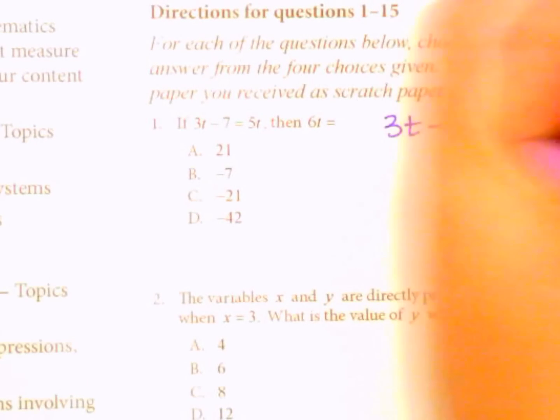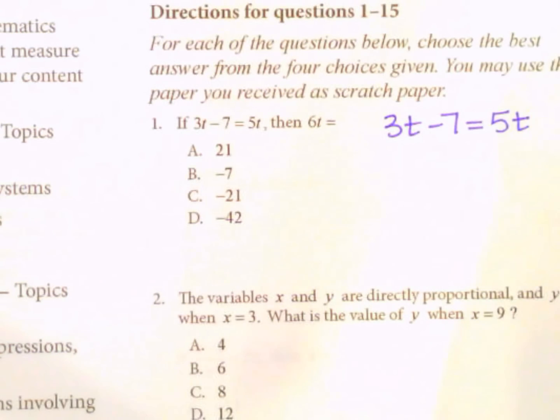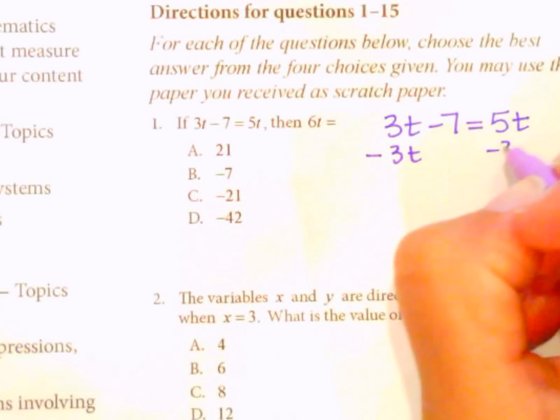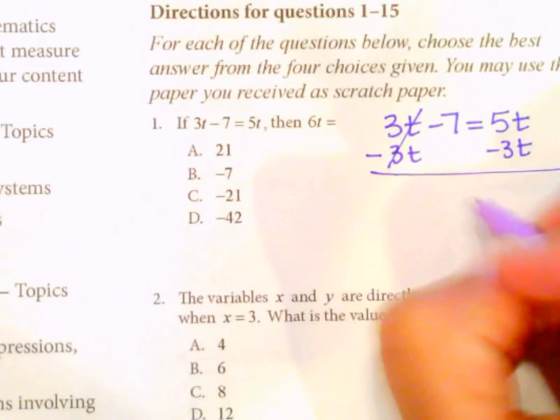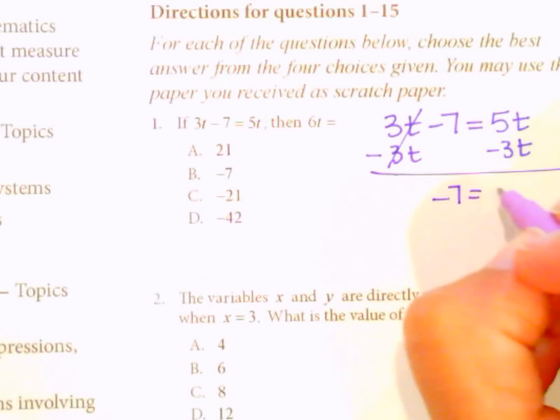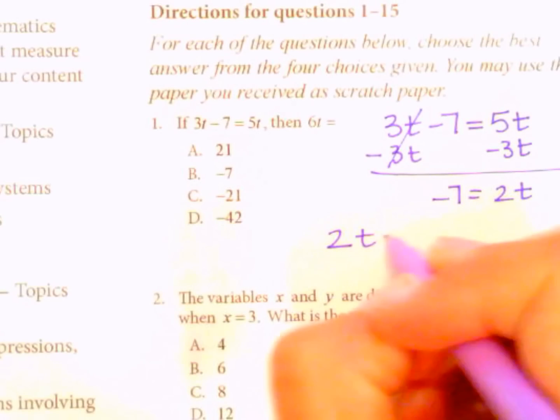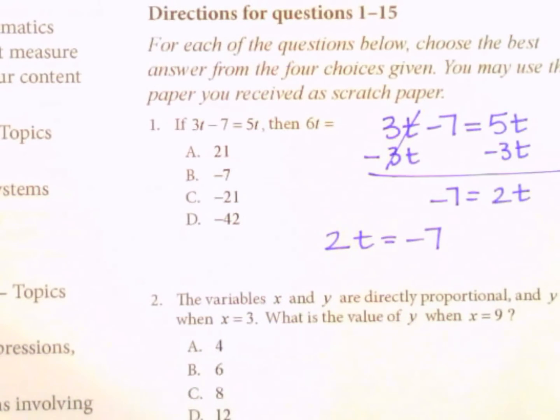So if we have 3t minus 7 equals 5t, we can subtract 3t from both sides. These will eliminate here, and we'll end up with negative 7 equals 2t. So if 2t equals negative 7, just rewriting what we already know, how can we figure out what 6t is?